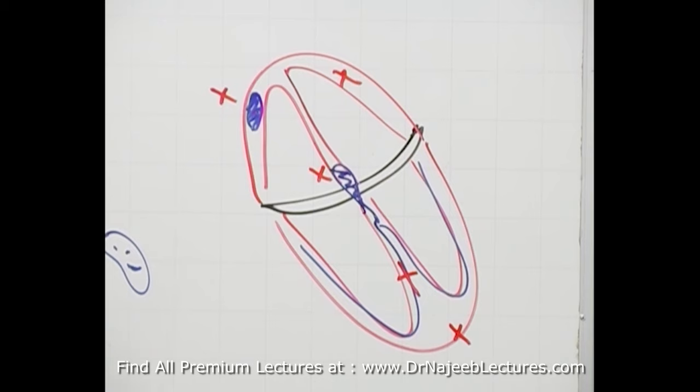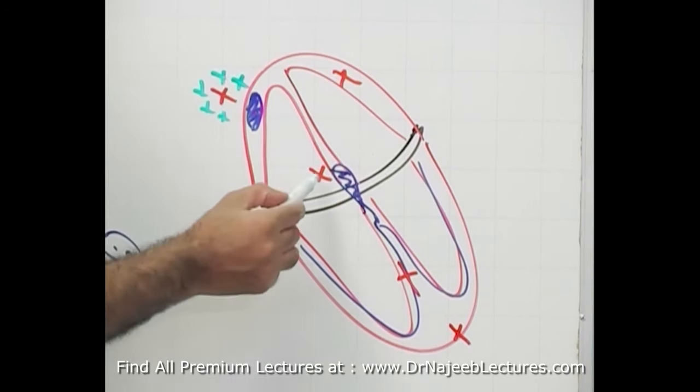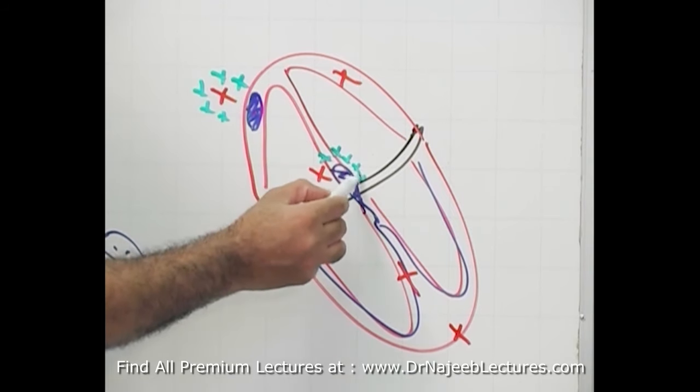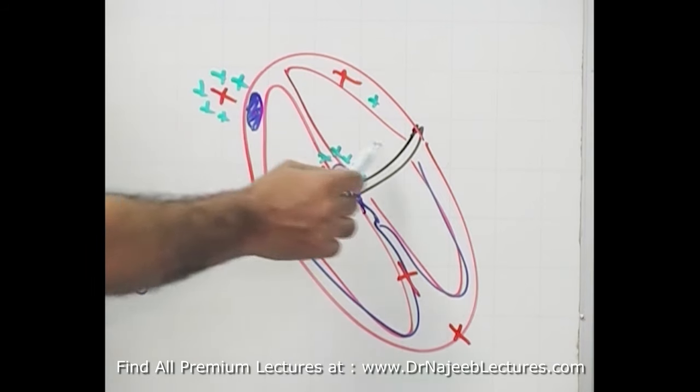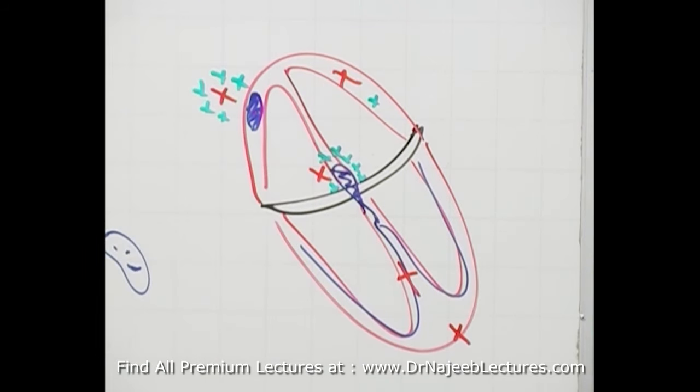Opposite to that, parasympathetic supply is not so diffusely present on the heart. Parasympathetic fibers are mainly concentrated on the SA node and AV node, and very few on atrium and almost non-existent to ventricle.